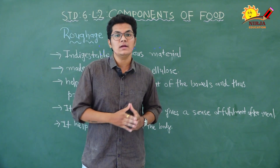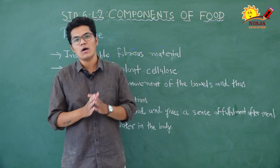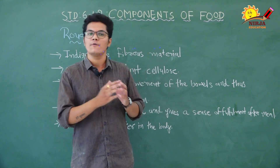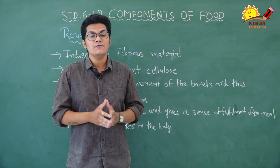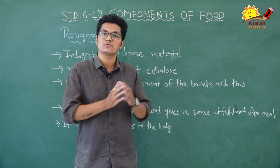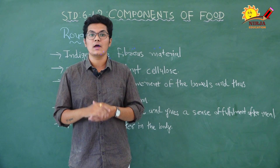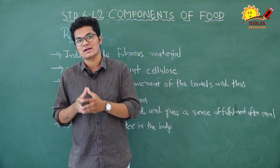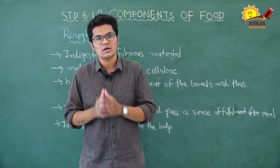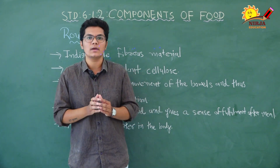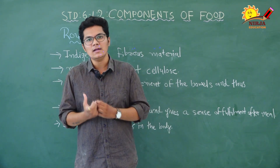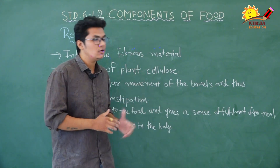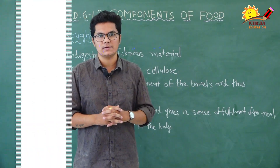So students, we learned about all nutrients — macronutrients, micronutrients, water, and roughage. We learned the functions and sources of those nutrients. Now while consuming a meal, you will know what you are consuming. Now let's learn about a balanced diet. In a meal, we need to balance these nutrients.